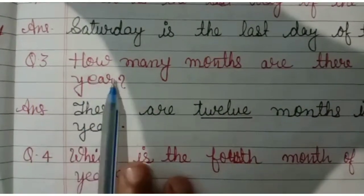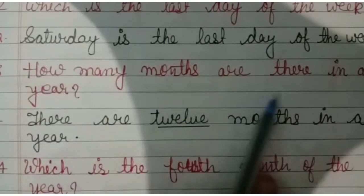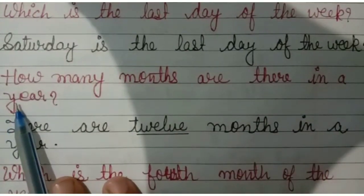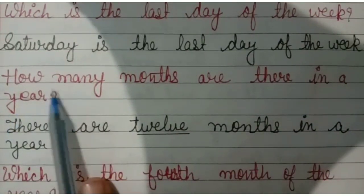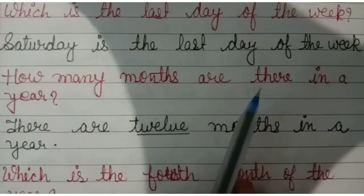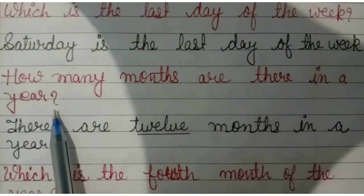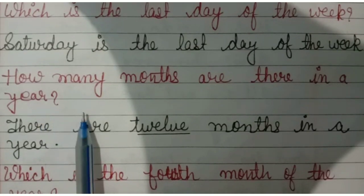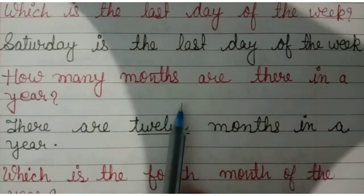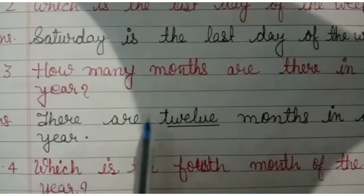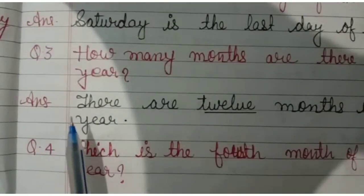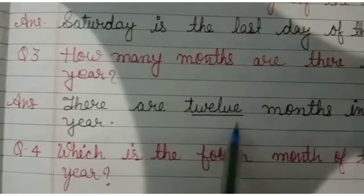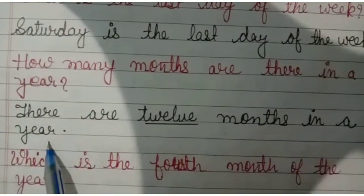Question 3: How many months are there in a year? There are 12 months in a year. Answer: There are 12 months in a year.